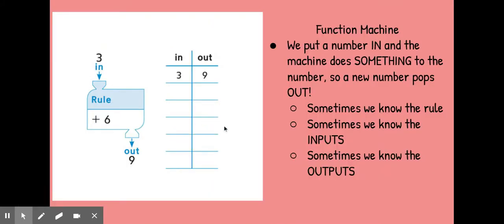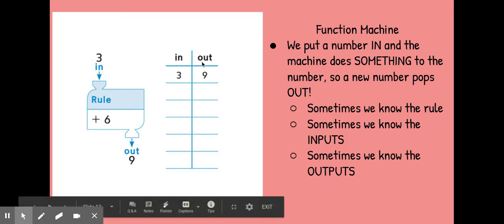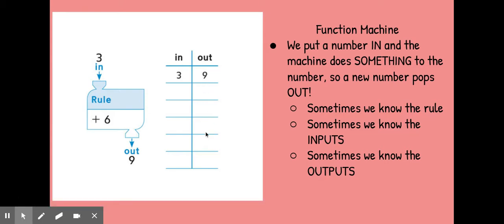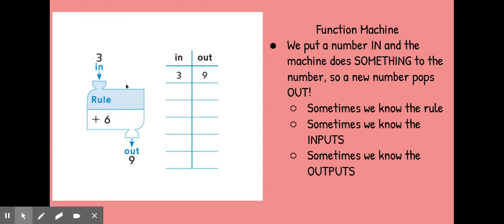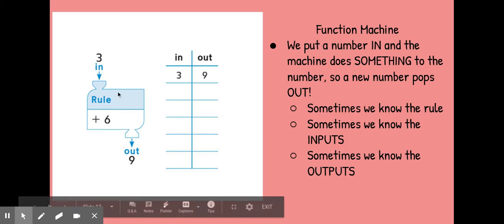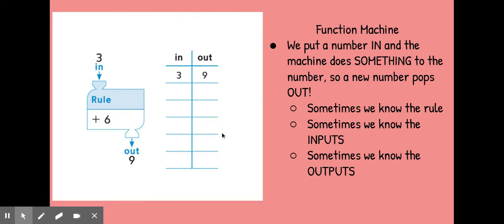Here is a little bit of information about a function machine. This is the table with inputs and outputs. We call all of the numbers on the left side an input, and all of the numbers on the right side are called outputs. This is considered a function machine — it's not really a machine, but it's a way you can train your brain to think about these problems. If you put a three in the machine, the machine applies the rule. In this case, it's adding six to whatever number gets put in, and then a nine pops out. Sometimes we know the input, and sometimes we know the output, and we're going to use the function machine mentality to figure out these problems.